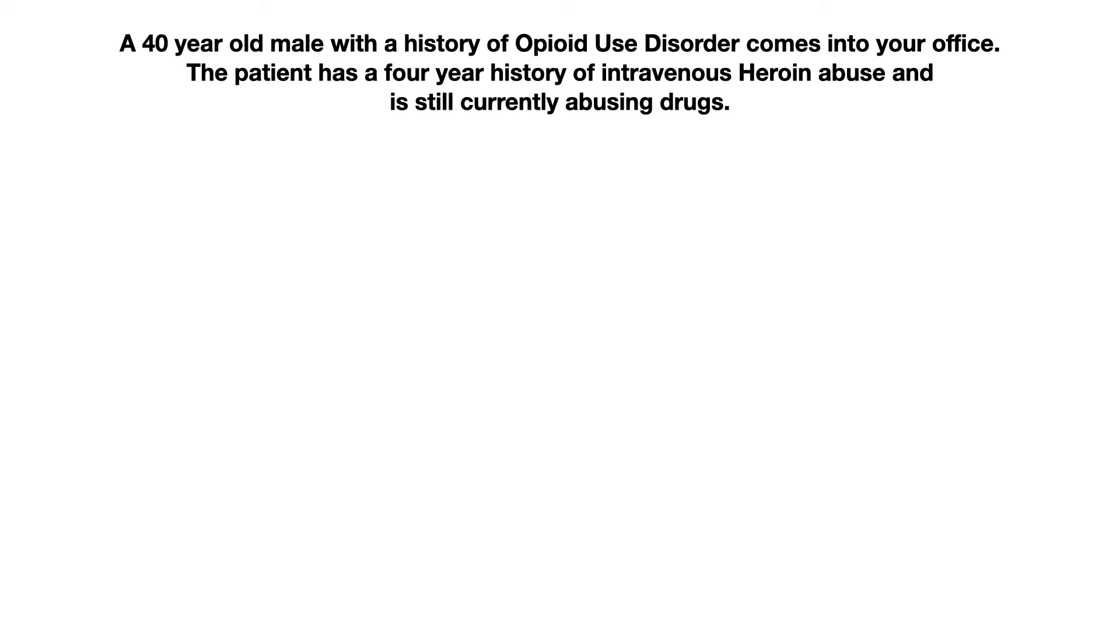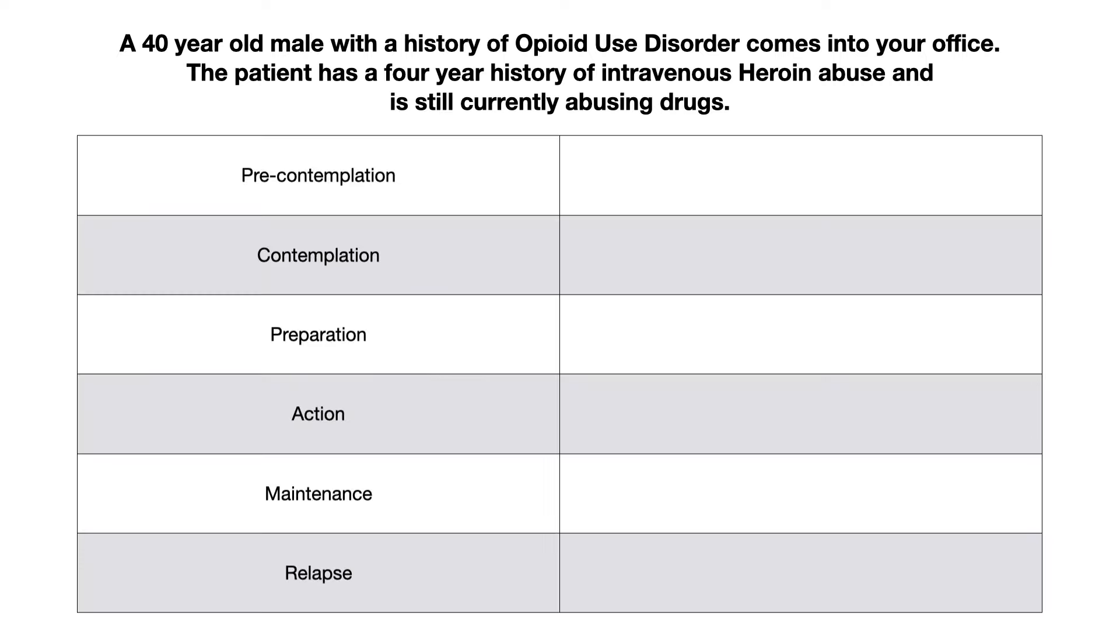So suppose that a 40 year old male with a history of opioid use disorder comes into your office. This patient has a four year history of intravenous heroin abuse and is still actively using heroin. Now, if we were to open up our table again and list all the stages, let's go through one at a time. And I'll give you an example of each of these various stages.